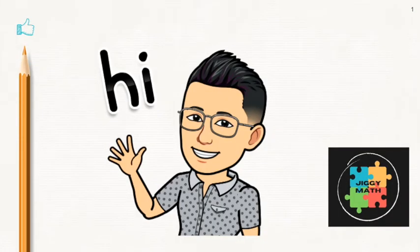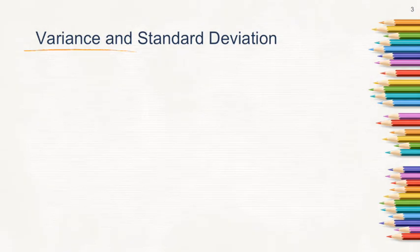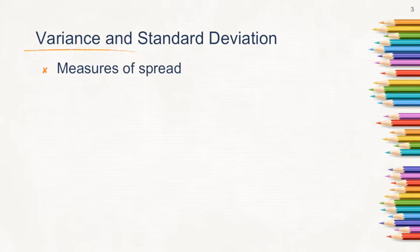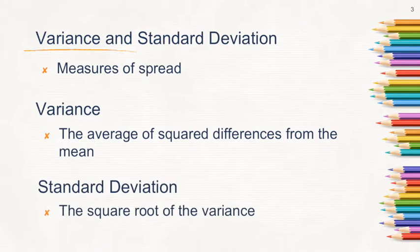Hi everyone, welcome to GQMAT. This time let's talk about variance and standard deviation of discrete random variables. Variance and standard deviation are measures of spread or dispersion — they indicate how scores are scattered from each other. Variance is the average of squared differences from the mean, while standard deviation is just the square root of the variance.